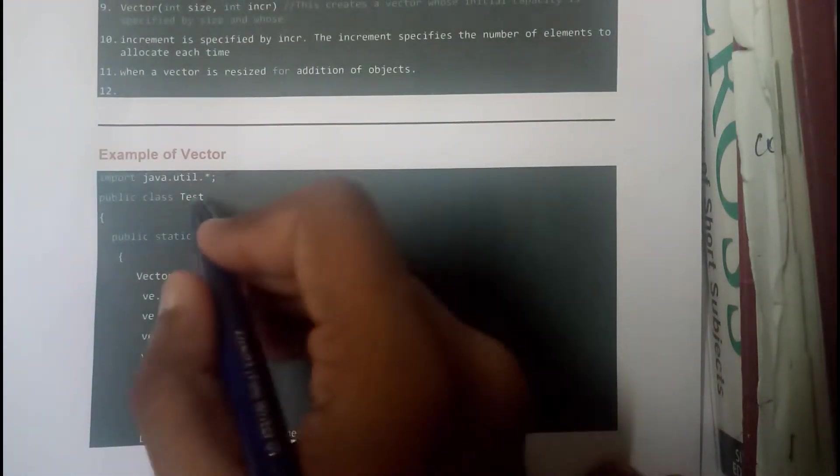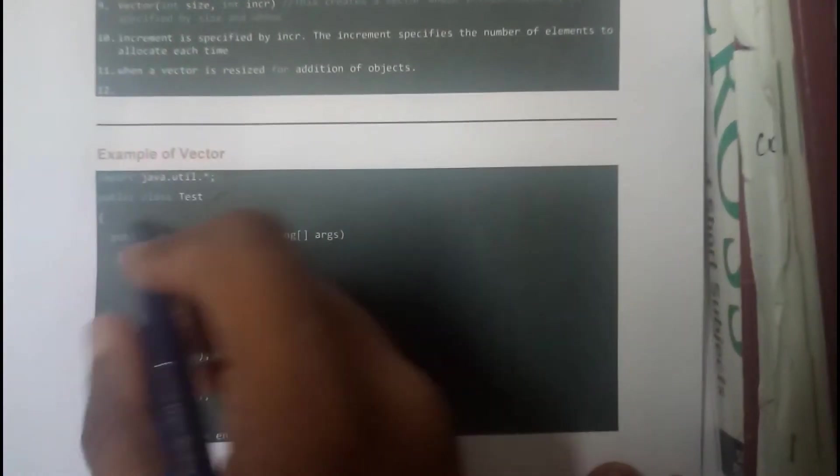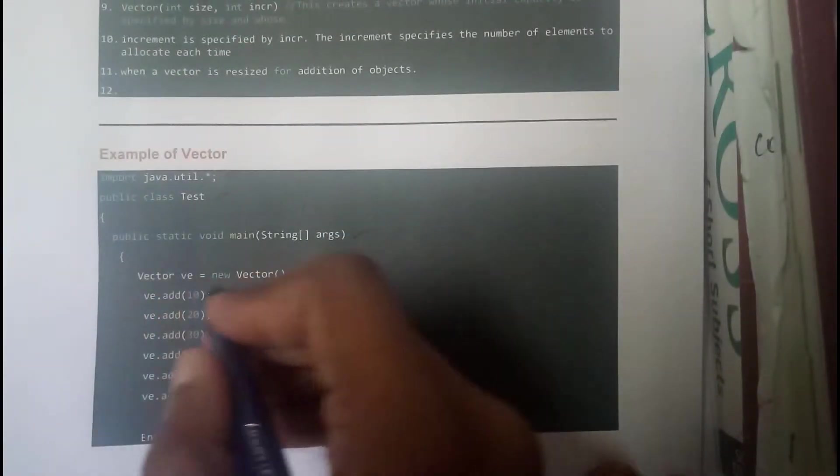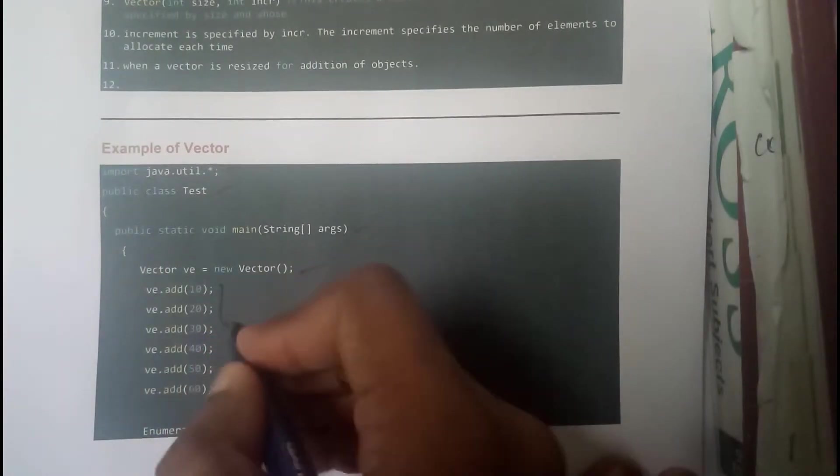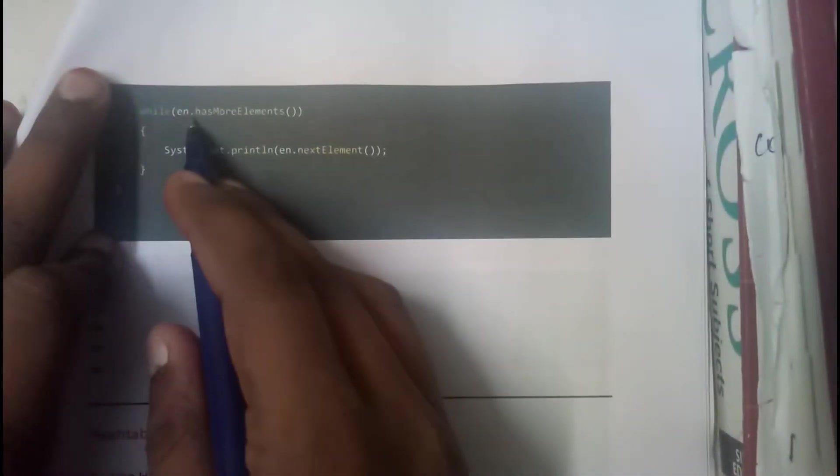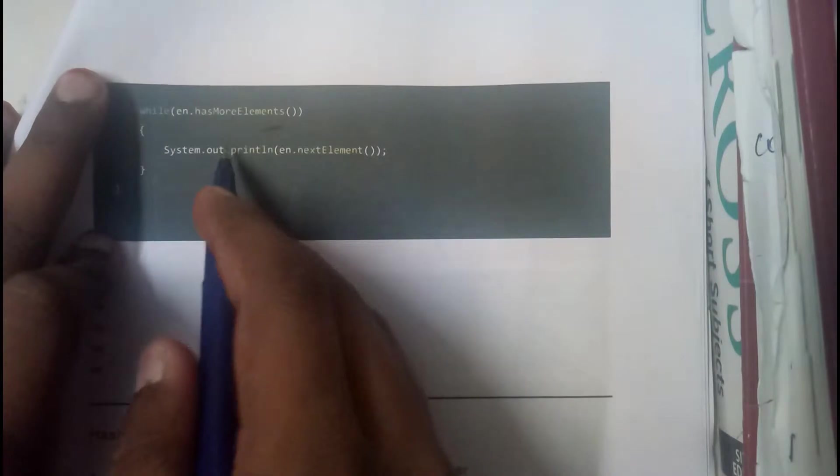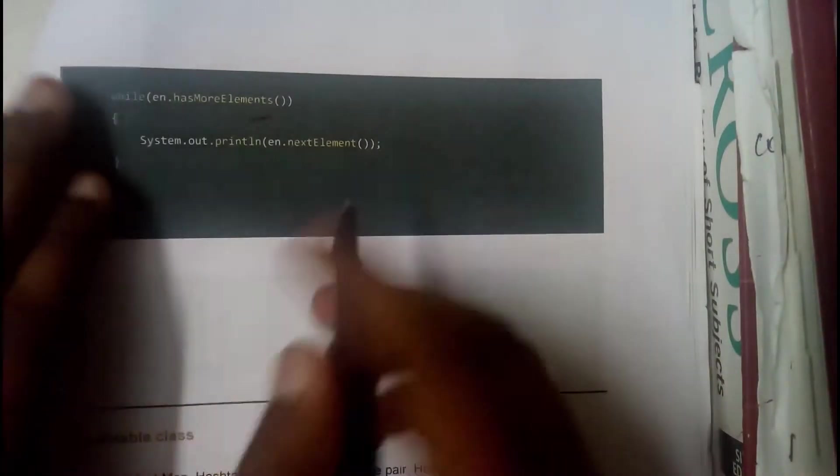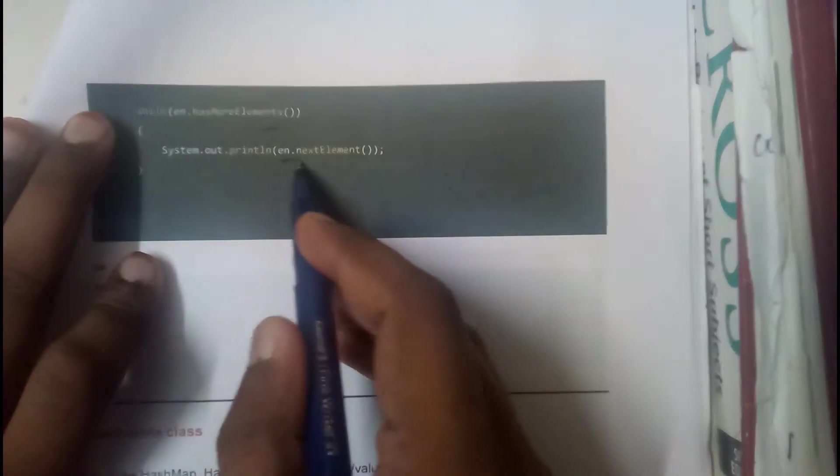Import java.util star. After that we have created a class test, public static void main string args. Then we created a vector and added these elements to our vector. Then we created an enumerator: en equals ve.elements. All these elements can be accessed now by using this en. We have written while en has more elements. In enumerator we will be using hasMoreElements method, and to print the element we will be using nextElement.